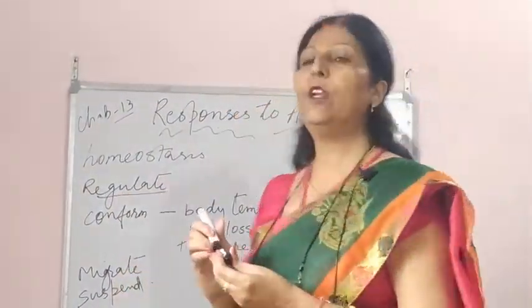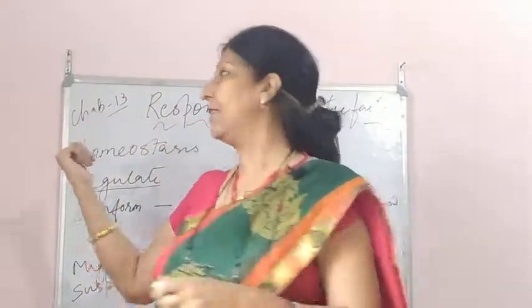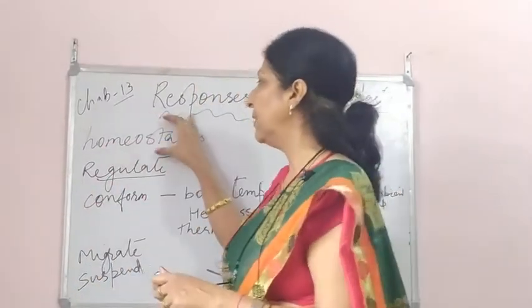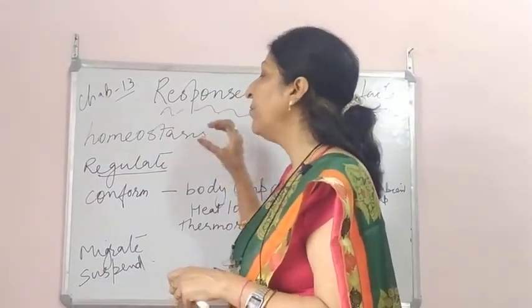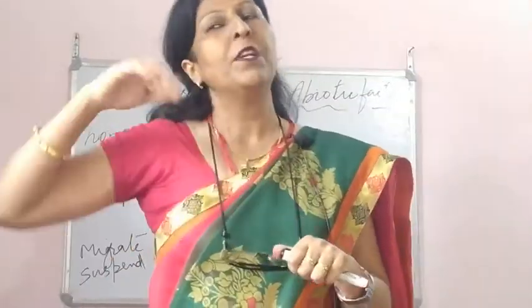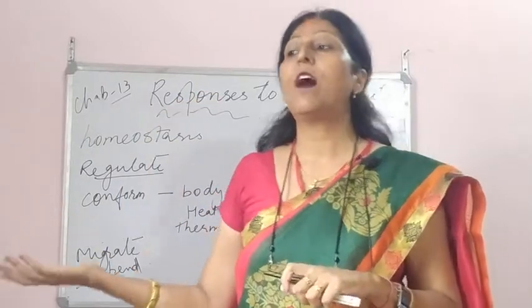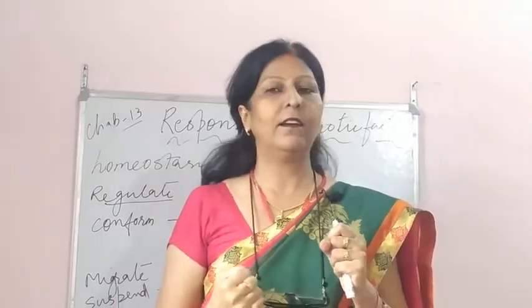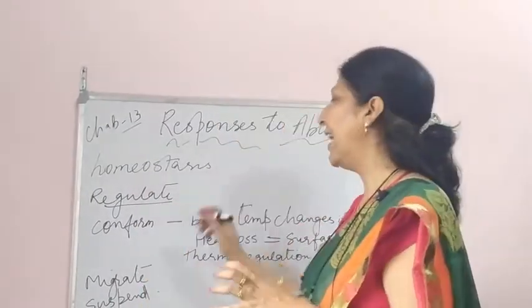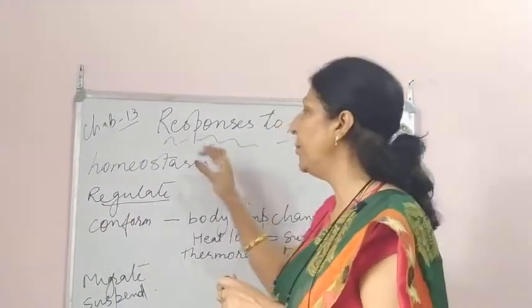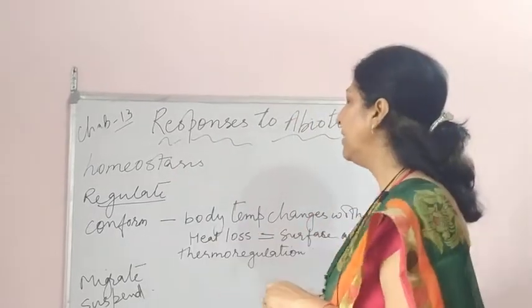Regulation works through homeostasis. Mammals are homeostatic and are able to regulate their body temperature during winters and summers — sometimes artificially using heaters and ACs, and sometimes the body itself prepares through shivering and sweating. That is how mammals become Regulators.